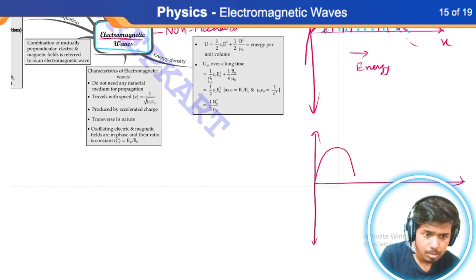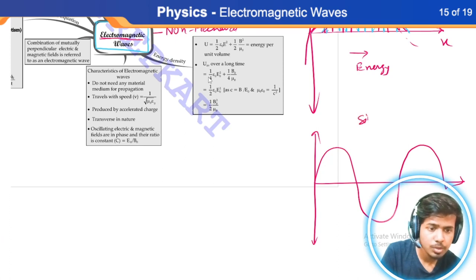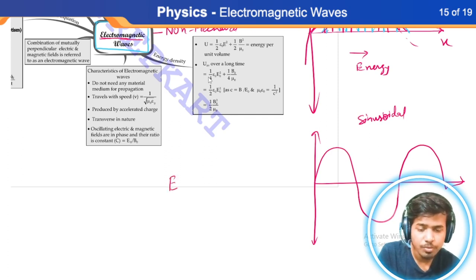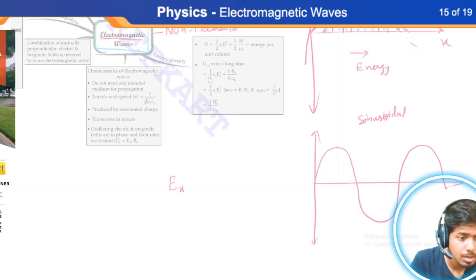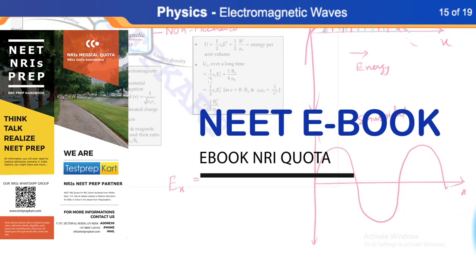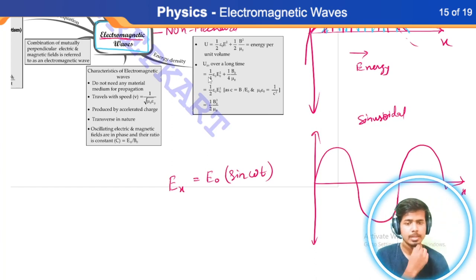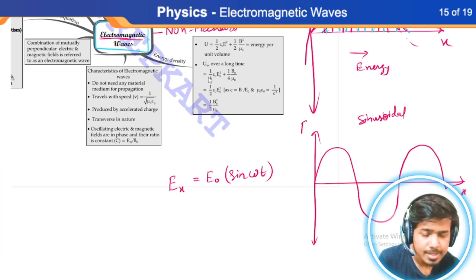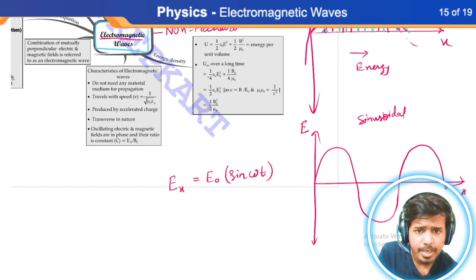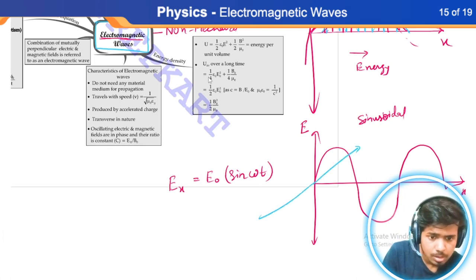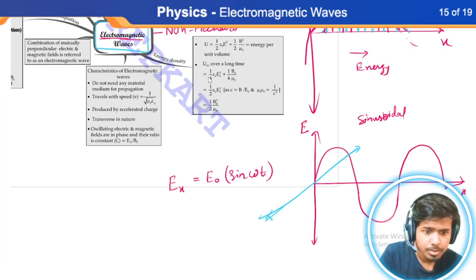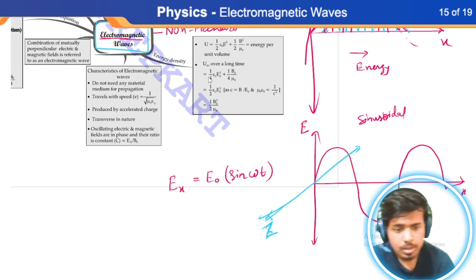This is a sinusoidal electric wave. You can represent the wave in the form of: E at any distance x is equal to E₀ multiplied by sin(ωt). Now, this is the y-axis for electric field. I can draw another axis which is the z-axis.